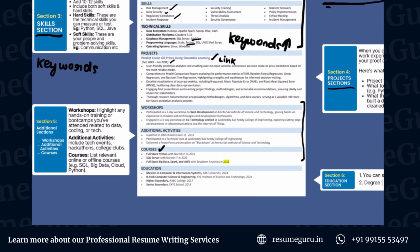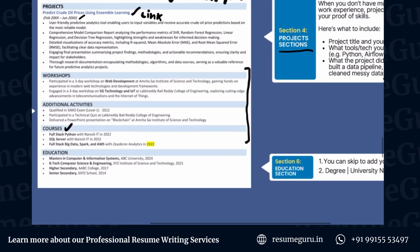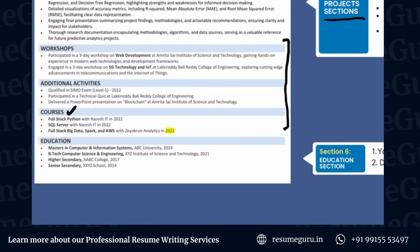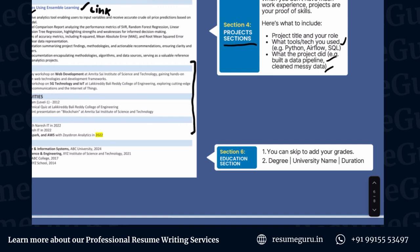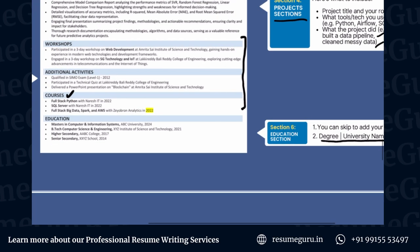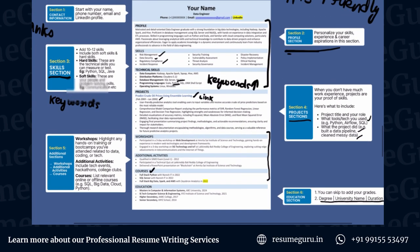Last but not least is your education section. The order of where you put the education section can vary — if your education is the most important part of your profile, you can put it higher up, but if you want to focus on other things, you can put it at the bottom. In this format, which is easy to read for ATS, you put up your degree, your college name, and your year of graduation. You can skip adding your grades — that's not mandatory off campus.